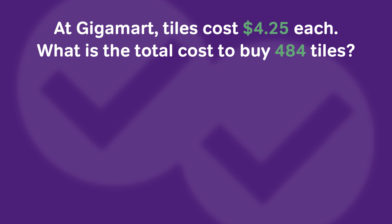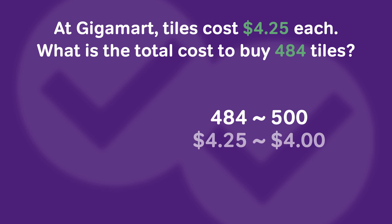We want you to look at 484 and say, "I can round that up to 500." And since we rounded up, we can round $4.25 a little bit down to $4. Just like that, we can see 500 times 4 is 2,000, so we know the answer has to be close to 2,000.